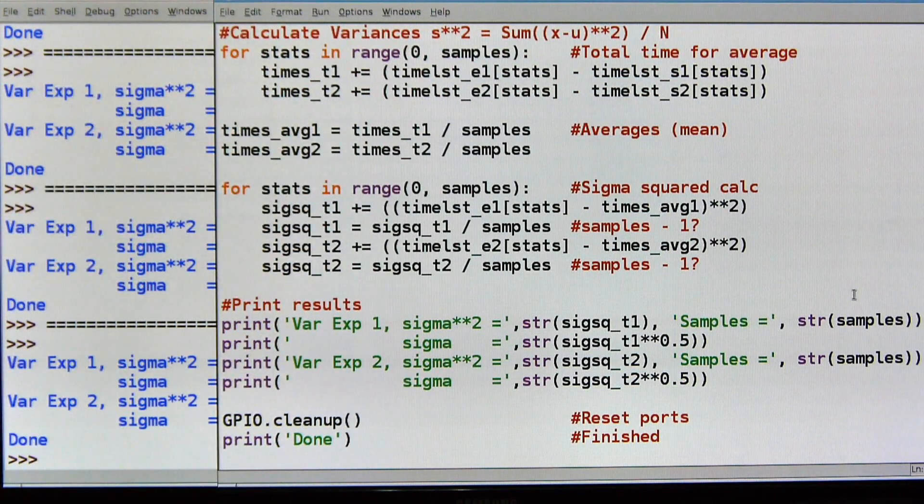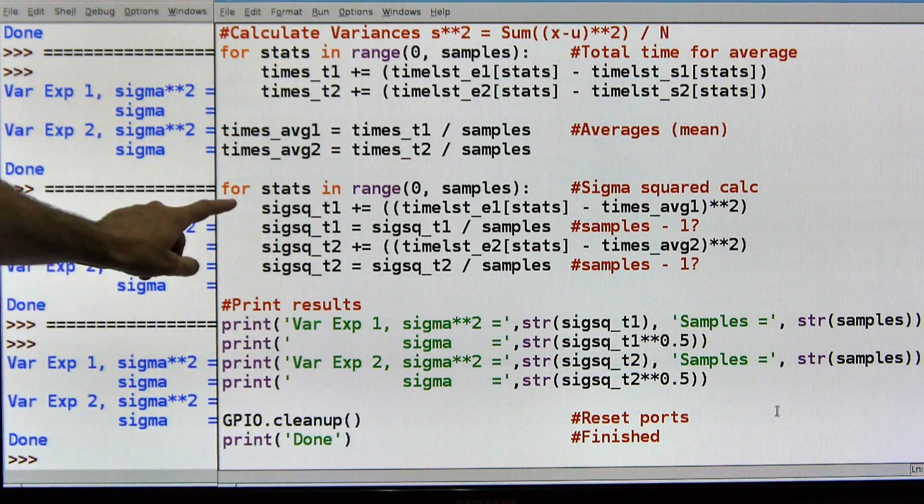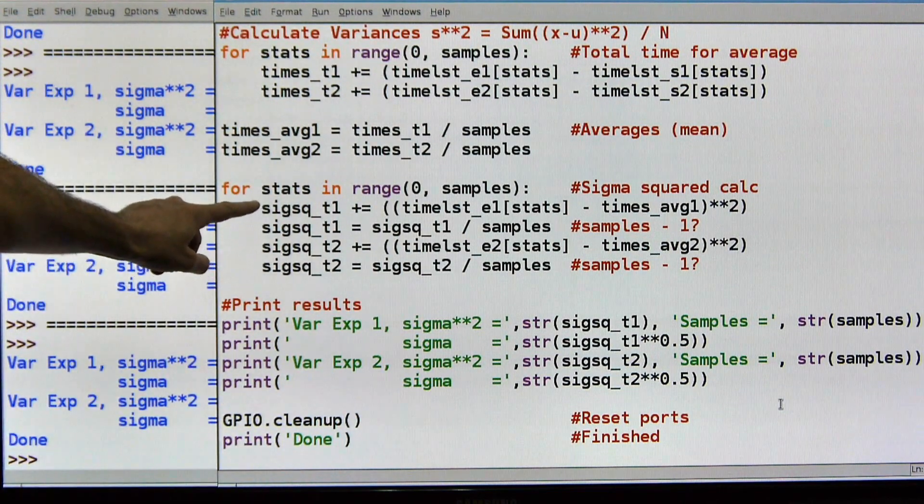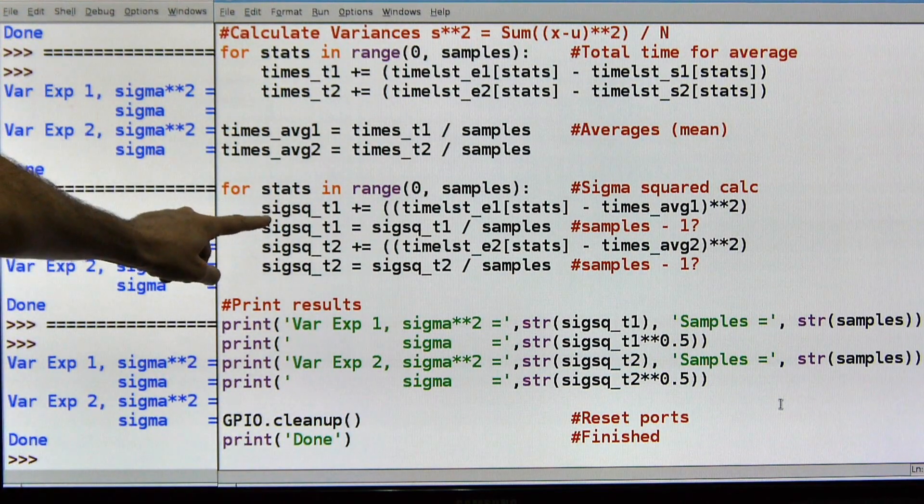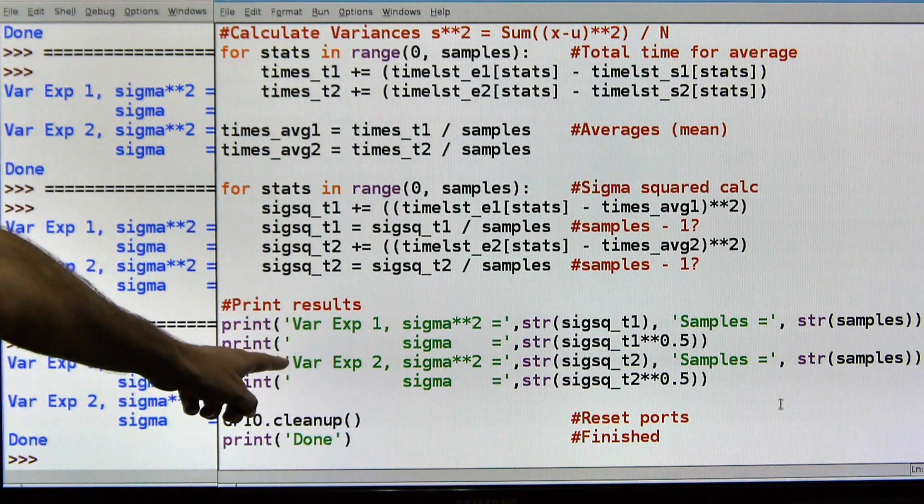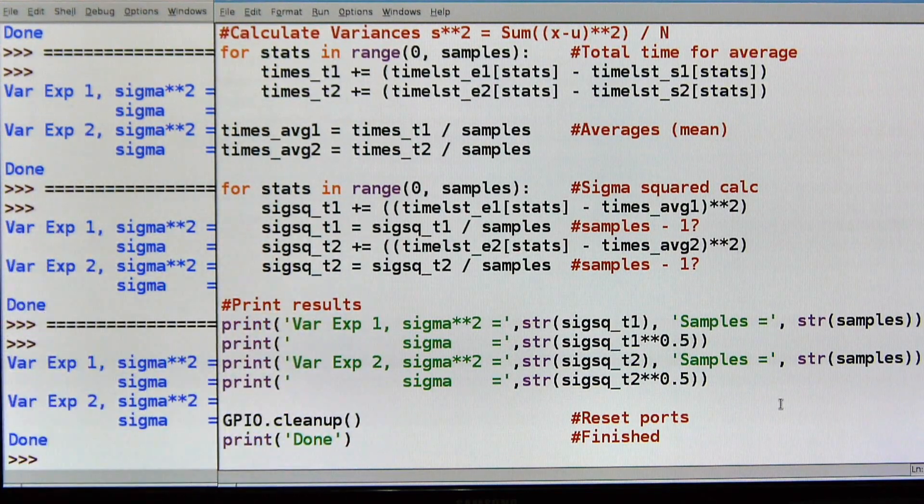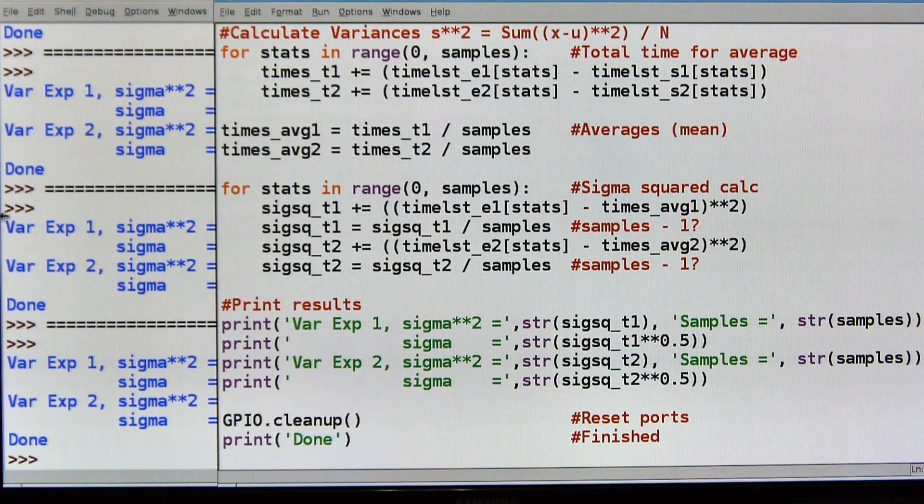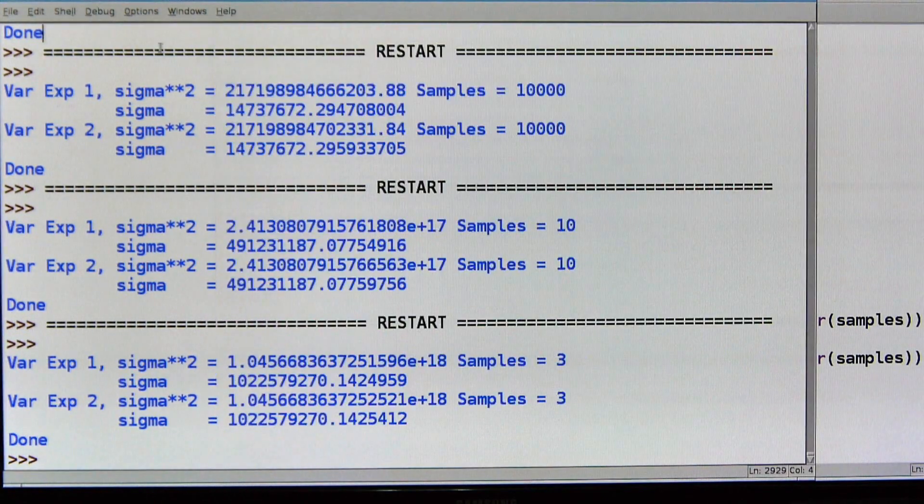So this is what they call sigma squared, and this is just doing some basic calculations. I'm adding up stuff in order to get an average. And down here, I calculate the average. So I've got the average time for the first experiment, average time for the second experiment. And then down here, this is where I calculate the sigma squared. So just do that, and then I print it out, and let's see what the results are. Let's go over here. I've already run these. I won't make you sit through them.